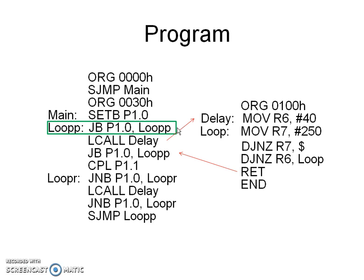When P1.0 is at logic low level, the instruction CPL P1.1 is executed. The instructions loopP, JB P1.0 loopP, LCALL delay, and JB P1.0 loopP together implement the logic for detecting a valid key press.